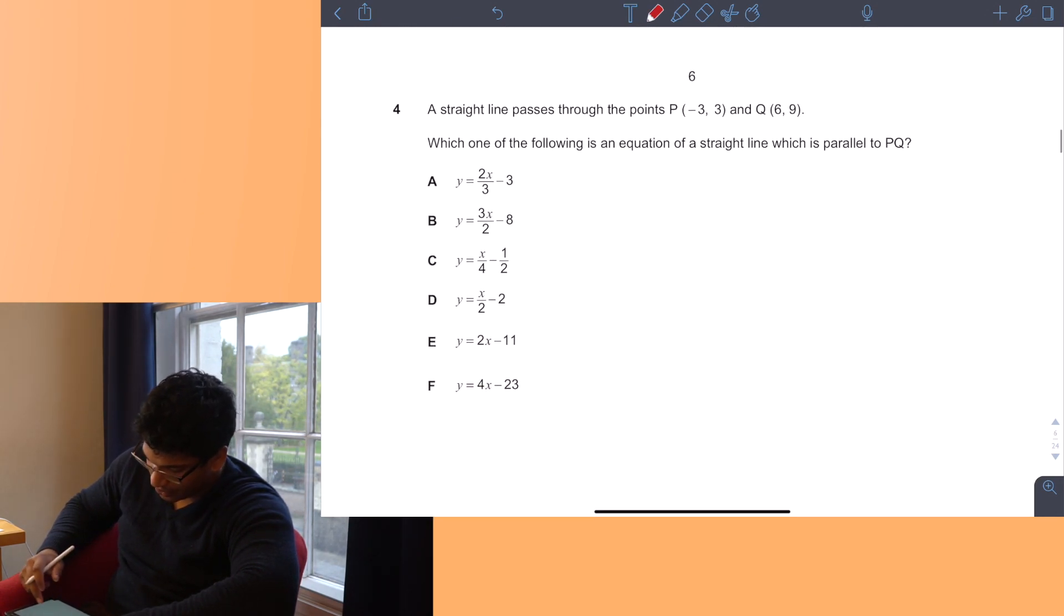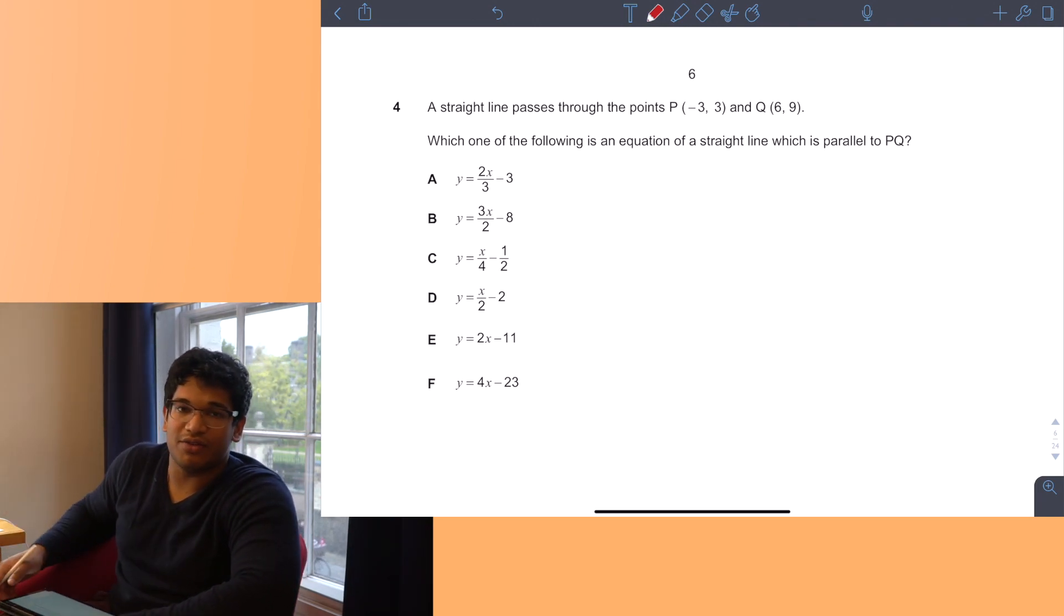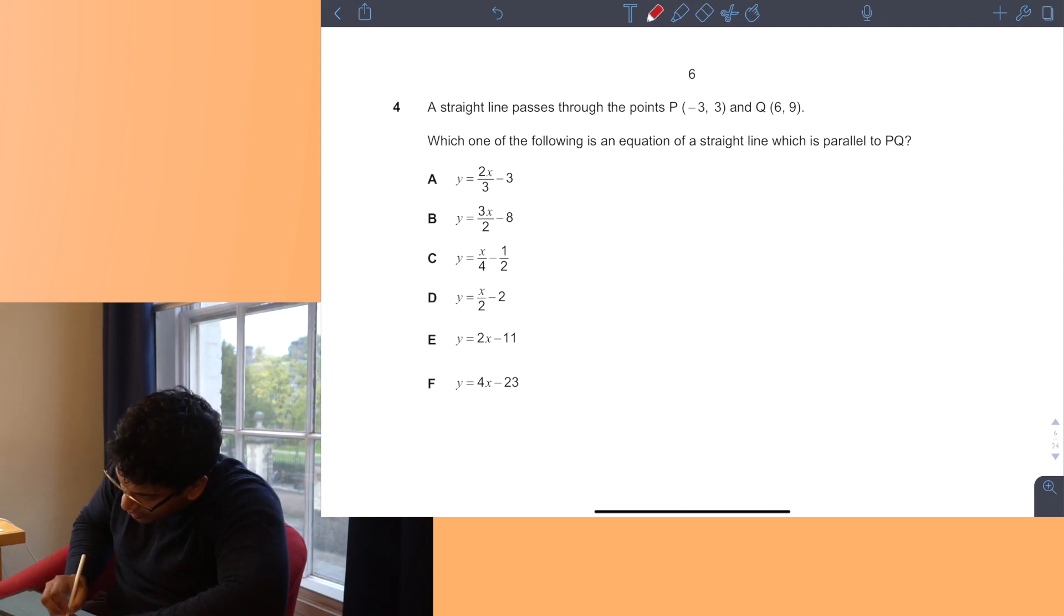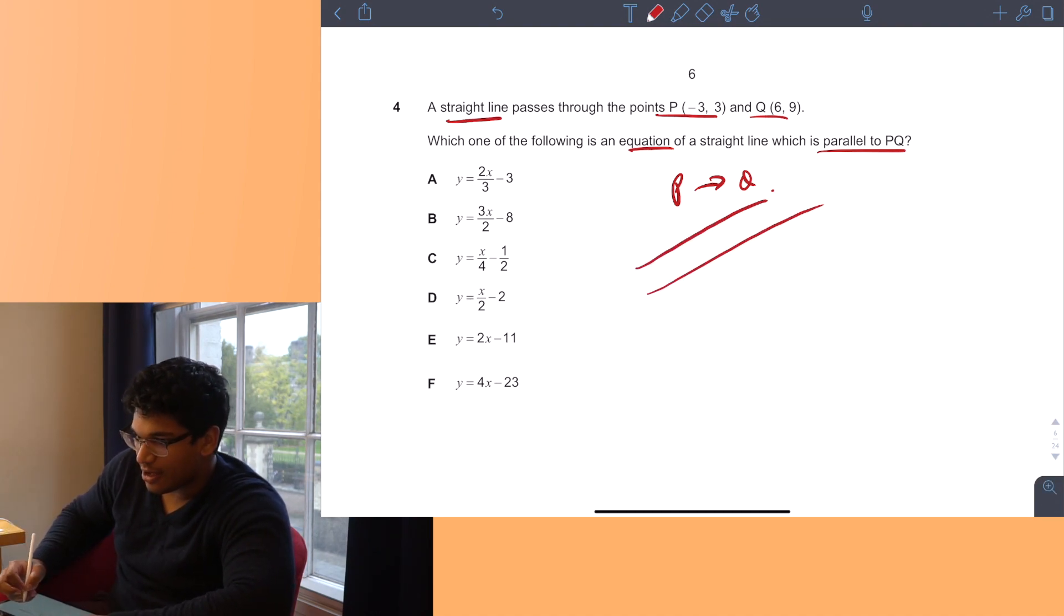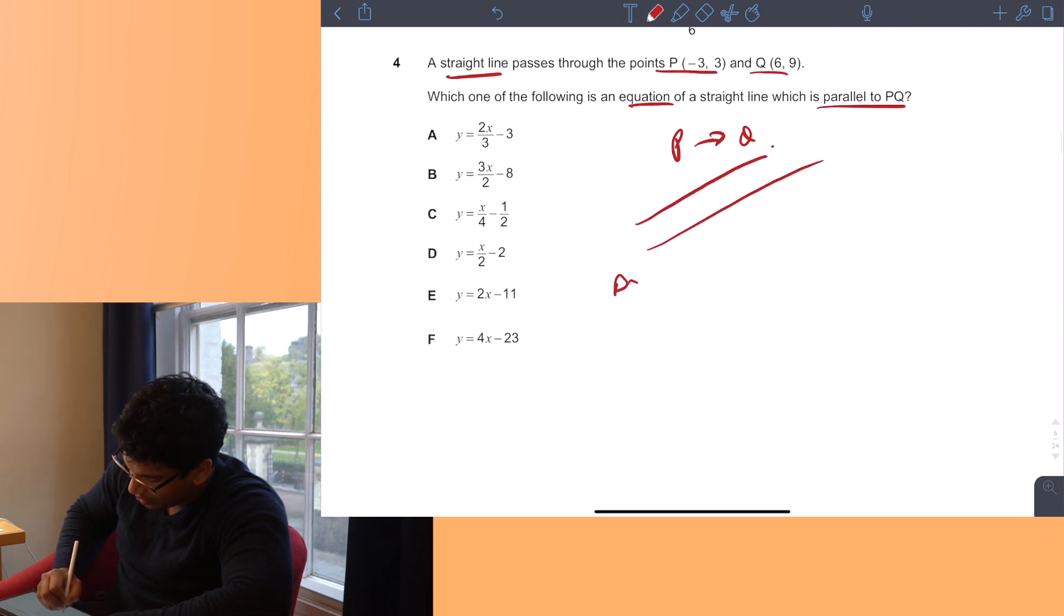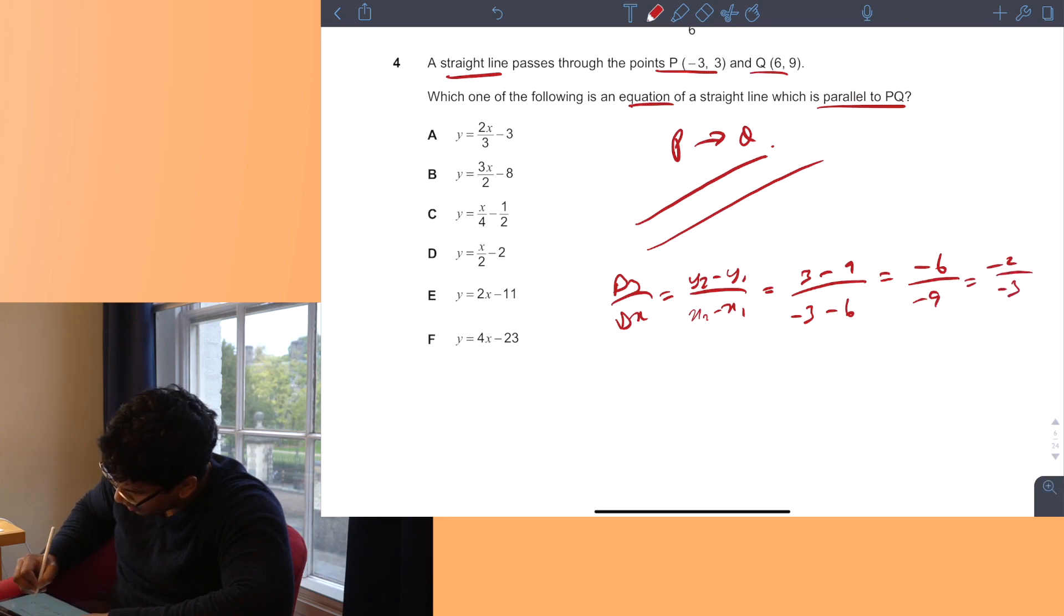Question 4 is a math question. A straight line passes through points P and Q. Which of the following is an equation of a straight line parallel to PQ? A parallel line has the same gradient. We need to work out the gradient, so it's dy over dx. So it'll be Y2 minus Y1 over X2 minus X1 equals the gradient of PQ, so it's 3 minus 9 over minus 3 minus 6.